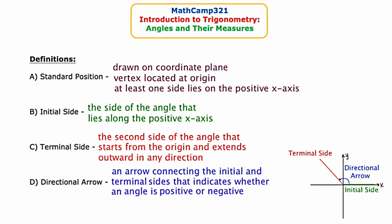The fourth and final term is directional arrow, denoted in blue. A directional arrow connects the initial and terminal sides and indicates whether an angle is going to be positive or negative. When you took geometry, all angles were positive and generally ranged between 0 and 360 degrees, so it might be surprising to hear that in trigonometry angles can be negative. We can use the arrow to indicate a negative angle by reversing its direction — more on that later. For now, just know that negative angles do exist.